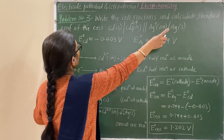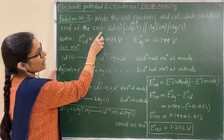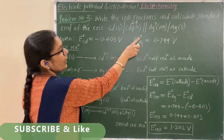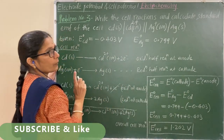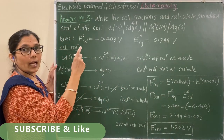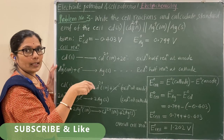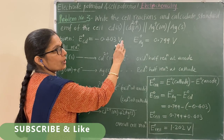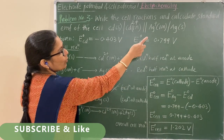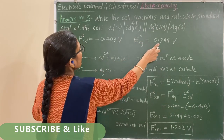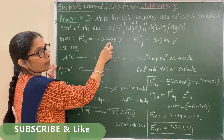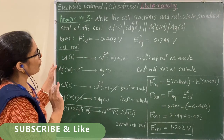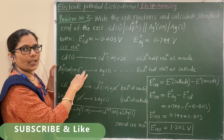For this cell, the standard potential of cadmium and silver are given. Calculate the standard cell potential. Determine which is the cathode — silver has the higher value. The answer involves 0.something minus (−0.31). Calculate this and verify your answer.